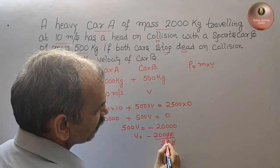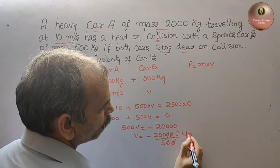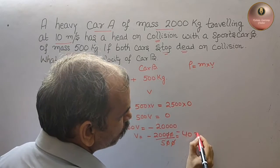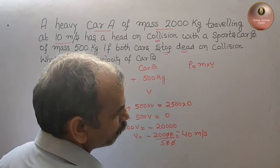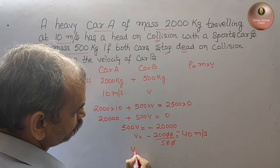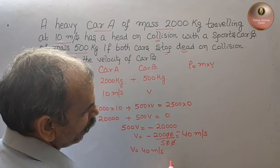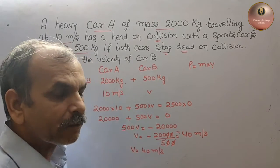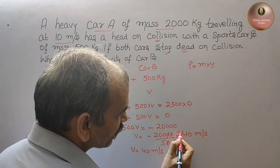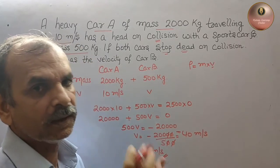Canceling the zeros, this becomes minus 40. That means velocity is minus 40 meters per second, so velocity is 40 meters per second. The minus sign means they are traveling toward each other. That's why we got the minus sign.